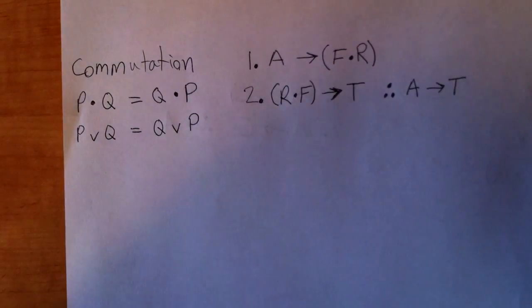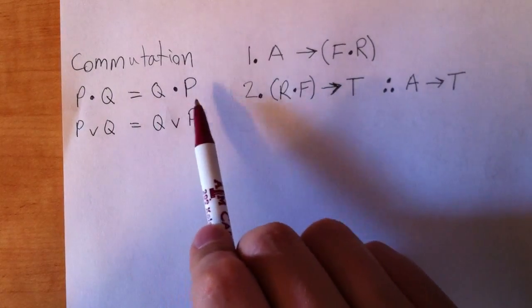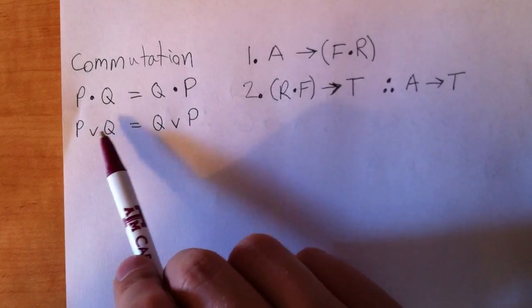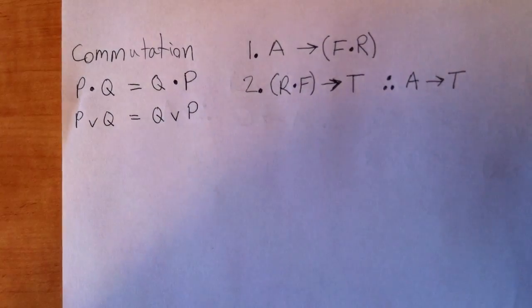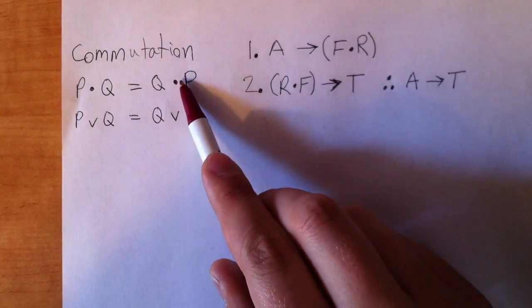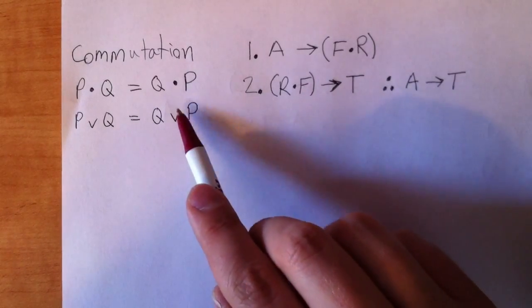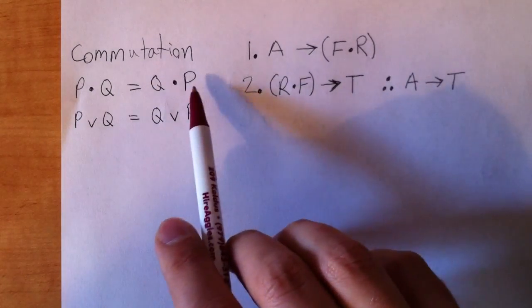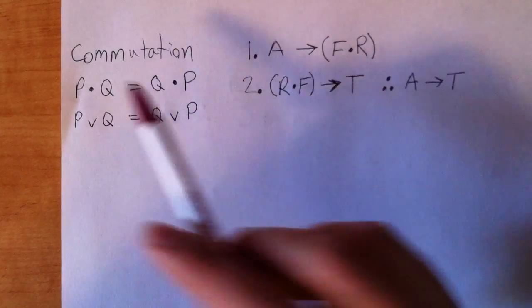Our next rule from 8.2 is commutation. This one's so obvious that you already know it. Commutation says that P and Q is equal to Q and P. Same thing with the wedges. P or Q is equal to Q or P. It doesn't matter. You're just flipping the order with commutation.